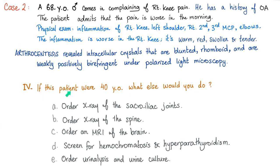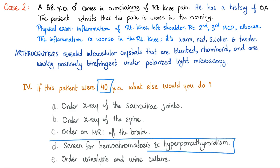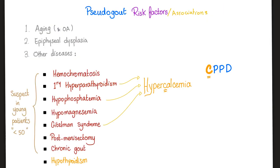Here is a hypothetical: if this patient were 40 years old instead of 68, what else should you do? If this is pseudogout and the patient is young, something else is going on. You screen for hemochromatosis and primary hyperparathyroidism because they are associated with pseudogout. That's how you become a better doctor instead of just memorizing.